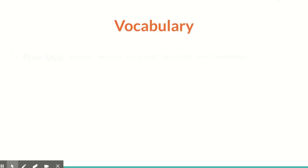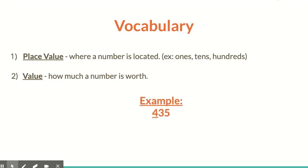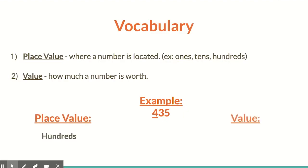A few vocabulary words. Place value lets us know where a number is located — if it's in the ones place, the tens place, the hundreds place, or thousands place. But value will tell us how much a number is worth: is it worth 10, 50, 300, or eight hundredths? So if we look at the number 435 and the 4 is underlined, the place value of that 4 is in the hundreds place, but the value of that 4 is actually worth 400. That's the difference between place value and value.